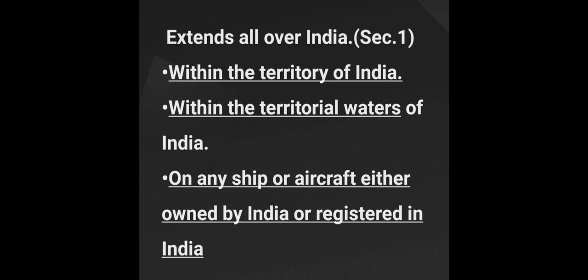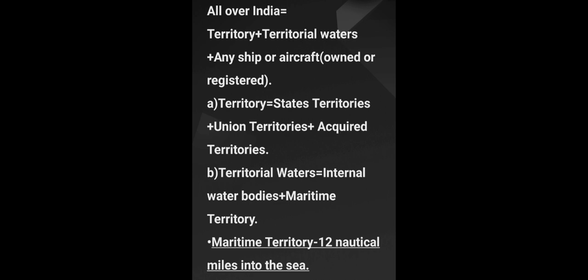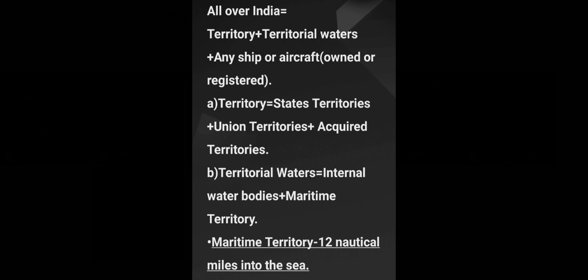According to Section 1 of IPC, the territorial jurisdiction of IPC extends all over India. IPC applies to any offense committed within the territory of India, within the territorial waters of India, and on any ship or aircraft either owned by India or registered in India. Territory of India includes states, union territories, and other territories which may be acquired. Territorial waters include internal water bodies such as canals, lakes, and rivers, and maritime territory extending to 12 nautical miles into the sea.